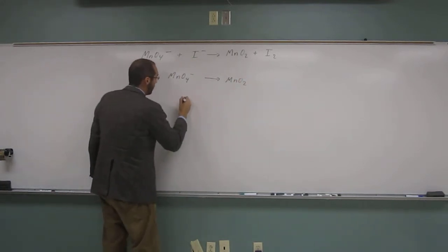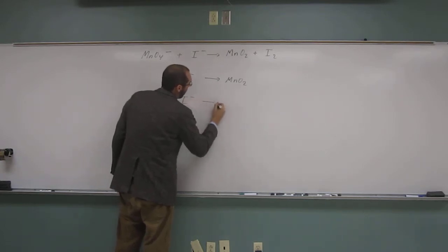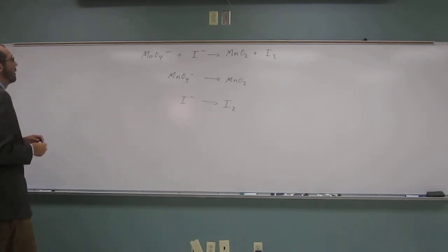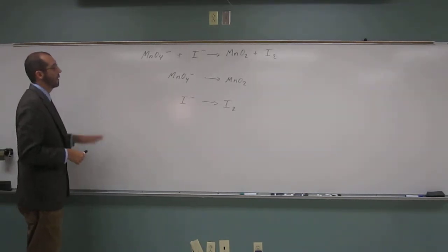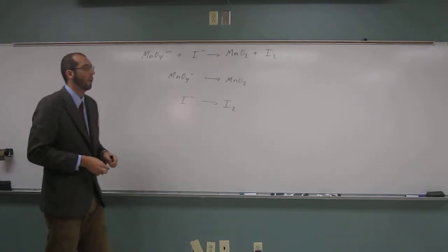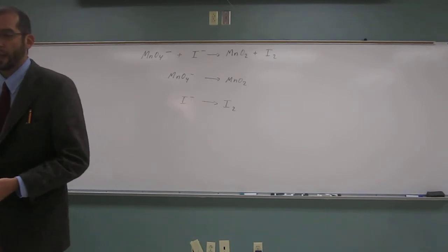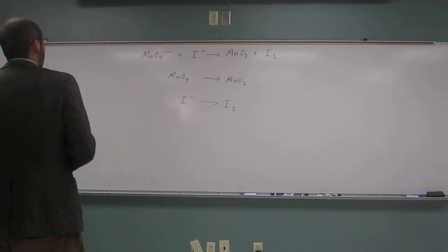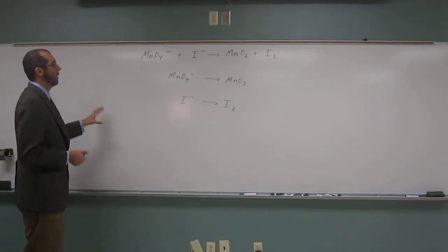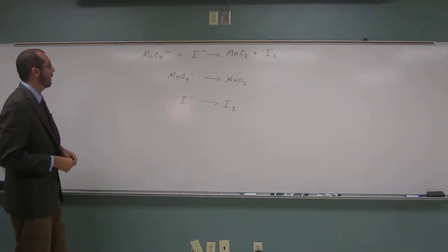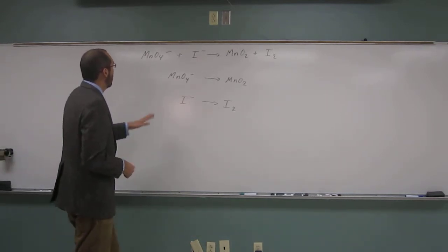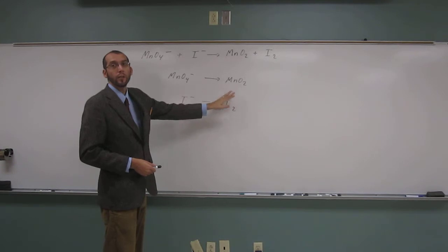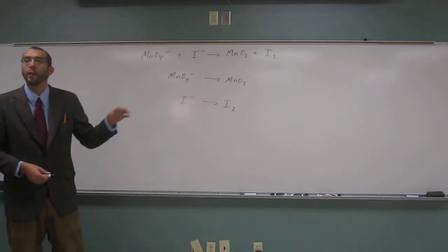And then of course what's left is going to be in the other reaction. Iodide goes to molecular iodine. Now if you wanted to, you could label one of these the reduction and oxidation reaction. Normally we say the things that gained electrons were being reduced and the things that lost electrons were being oxidized.